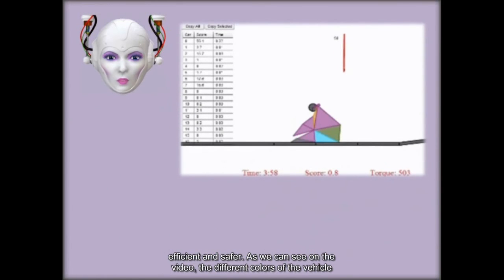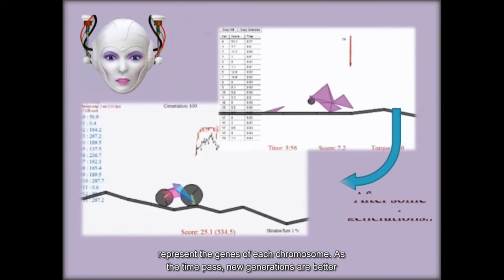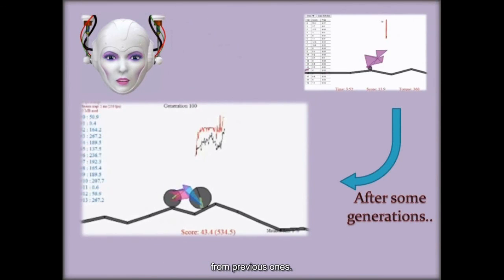As we can see on the video the different colors of the vehicle represent the genes of each chromosome. As the time passes, new generations are better from previous ones.